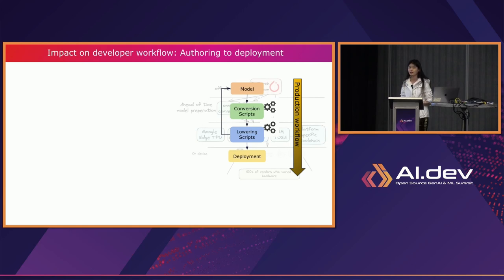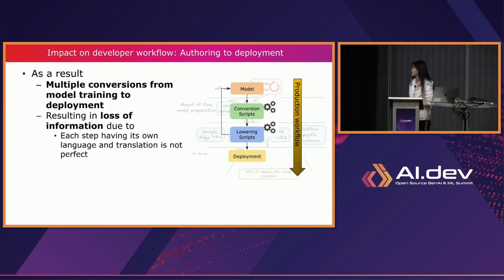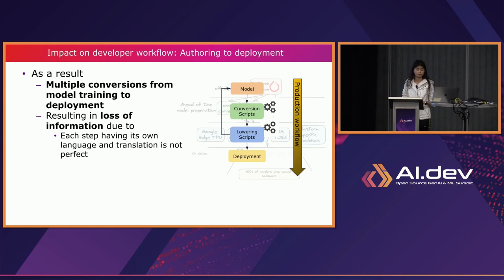This is how it impacts developers. The production workflow involves lowering scripts — meaning generating platform-specific artifacts using targeted tool chains. Lowering across boundaries from one domain to another likely introduces loss of information, because each domain has its own language and translation is imperfect. By the time the model is deployed, it is no longer a PyTorch model and we can't reason about where parts of it came from. Maintaining versions of tools is also not trivial — if one conversion tool gets upgraded, the entire workflow chain likely breaks.